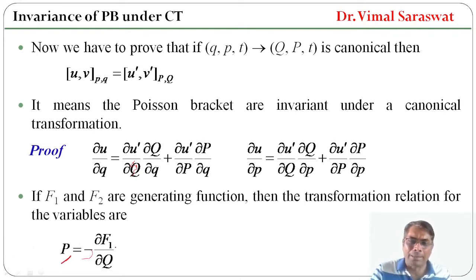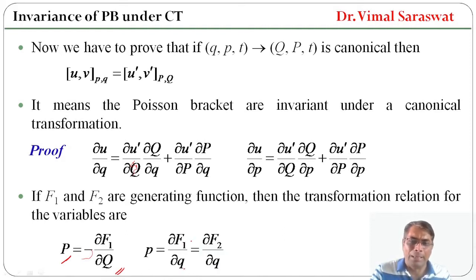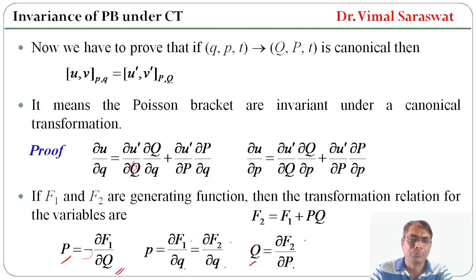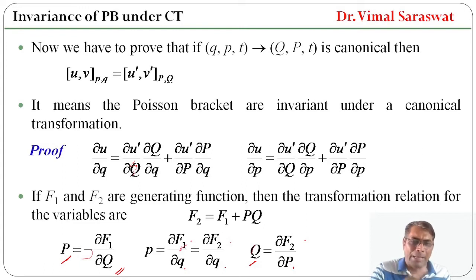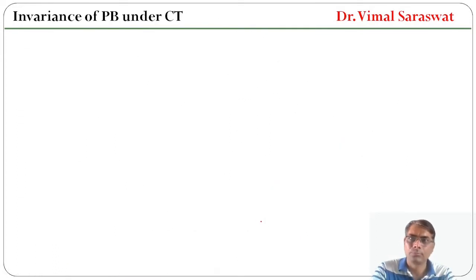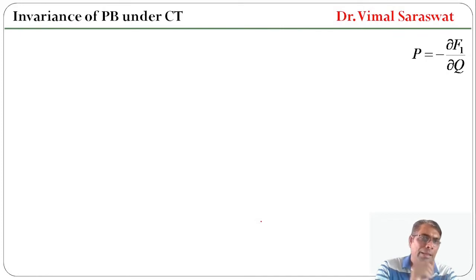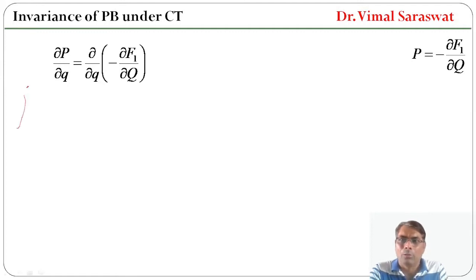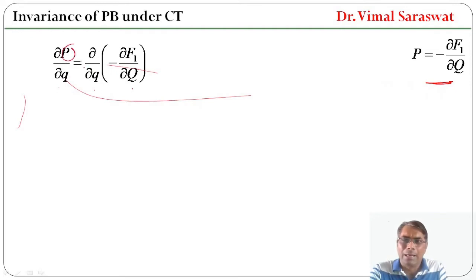Capital P equals minus del F1 / del capital Q. Small p equals del F1 / del q, which also equals del F2 / del q. Capital Q equals del F2 / del P. And the relation between F1 and F2 is: F2 equals F1 plus pQ. Since capital P equals minus del F1 / del capital Q, now del P / del q equals del/del q of (minus del F1 / del Q). So we put this P here and get this relation.